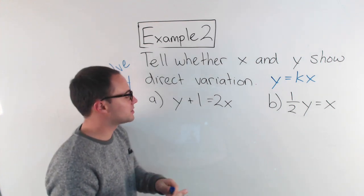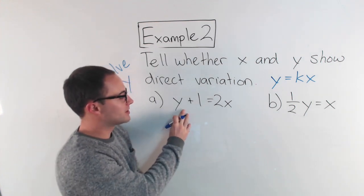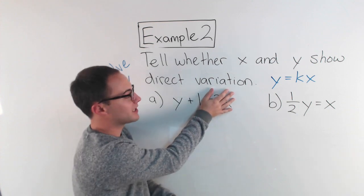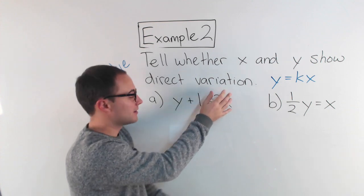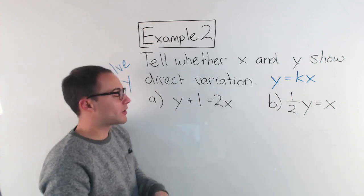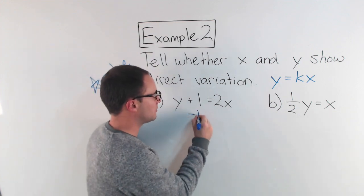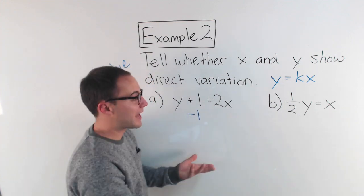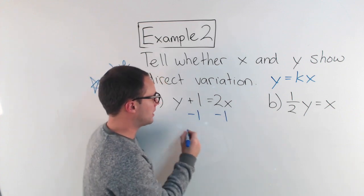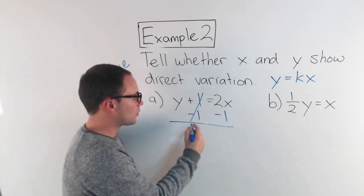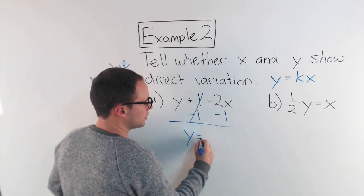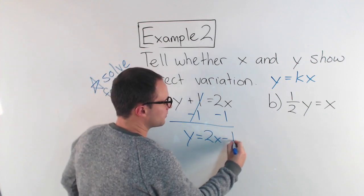Hopefully, you remember a little bit of algebra. Notice I'm solving for y. I'm trying to get y alone. It's not alone. We have this plus 1. So I need to get rid of that plus 1. And I do that by subtracting 1. Anything I do to one side, I have to do to the other. So subtract 1 here. That becomes 0, goes away. And I get y equals 2x minus 1.